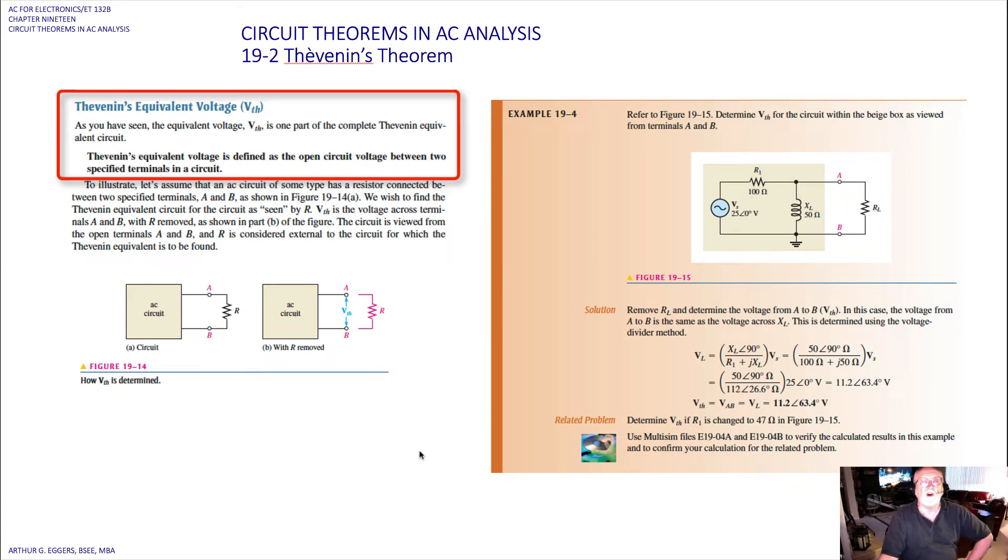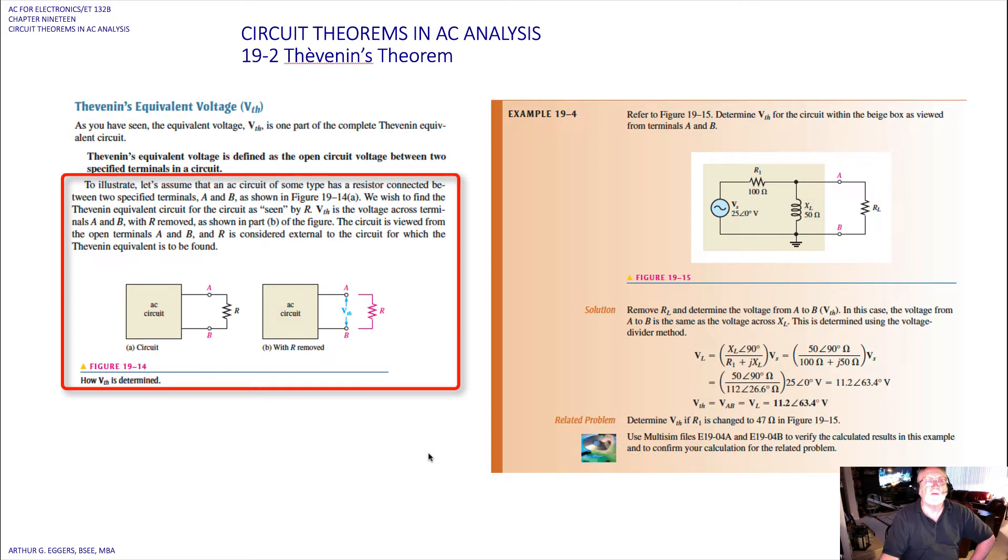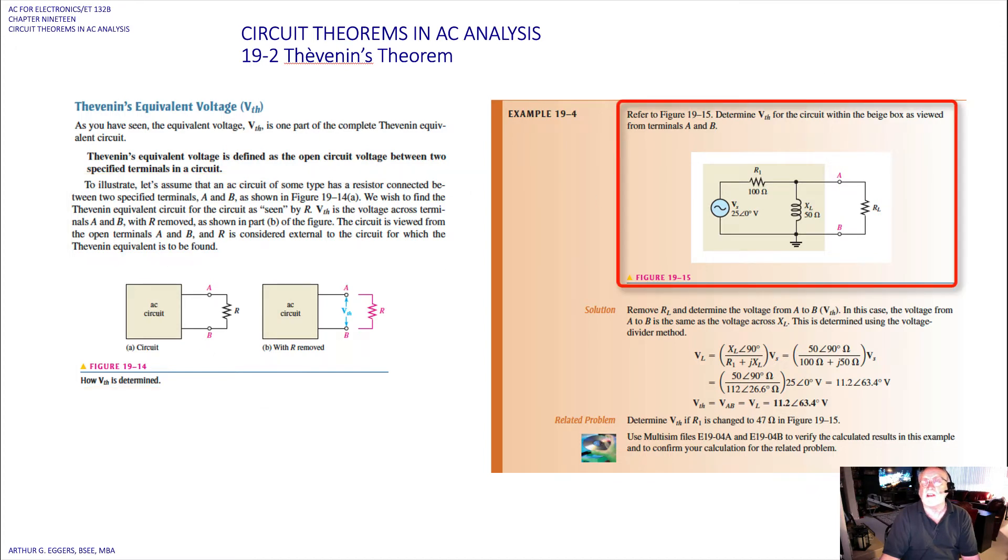The Thevenin's equivalent circuit is defined as the open circuit voltage between two specified terminals in a circuit. Let's assume that an AC circuit of some type has a resistor connected between two specified terminals A and B. If we wish to find the Thevenin equivalent circuit for the circuit as seen by this resistor placed outside the output, the V_Thevenin is the voltage across terminals A and B with the resistor R removed. The circuit is viewed from the open terminals A and B, and R is considered external to the circuit for which the equivalent Thevenin is now found.